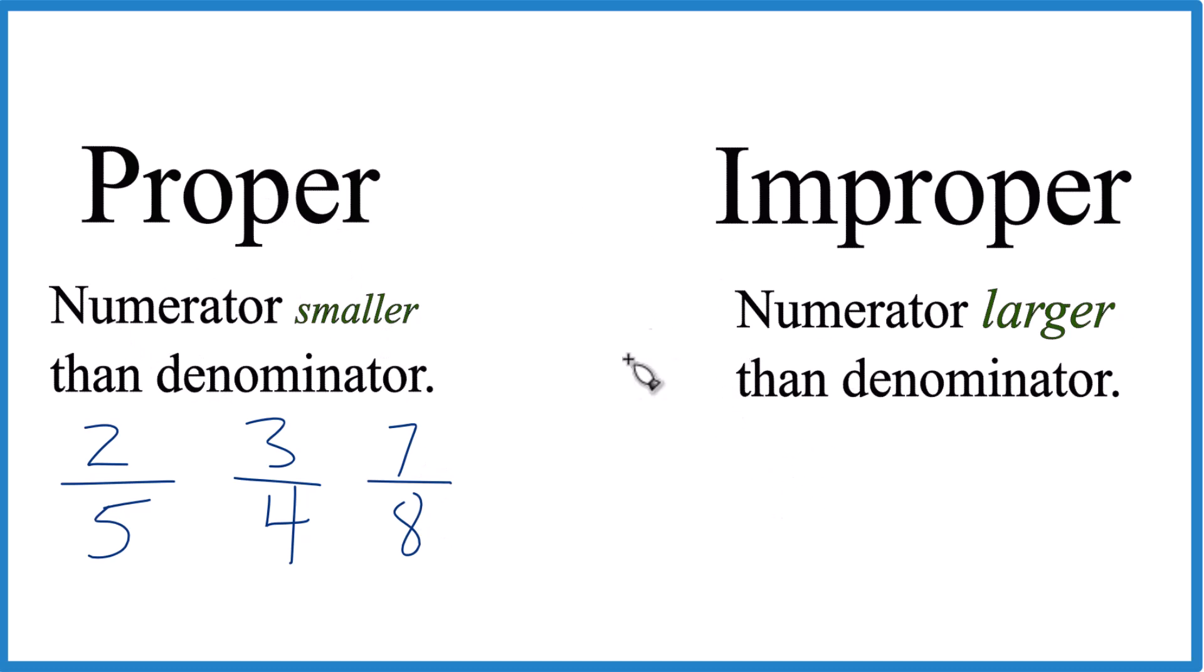Improper, it's the reverse. The numerator is larger than the denominator. So something like 5 halves, that would be an improper fraction,